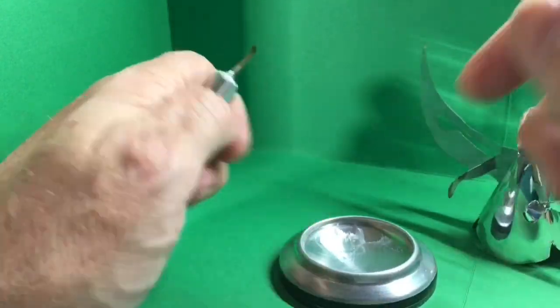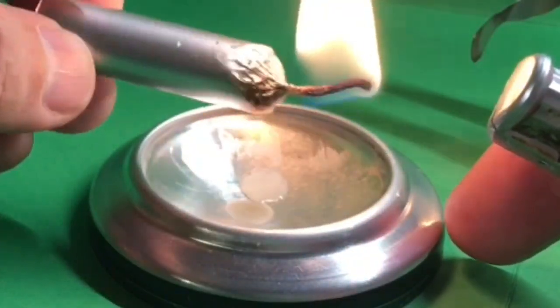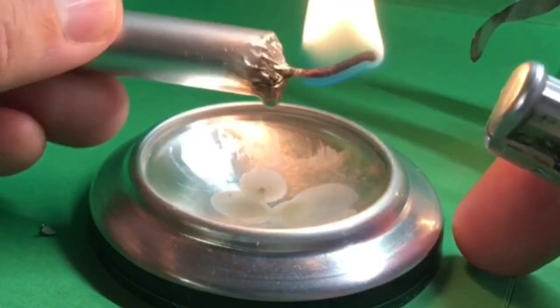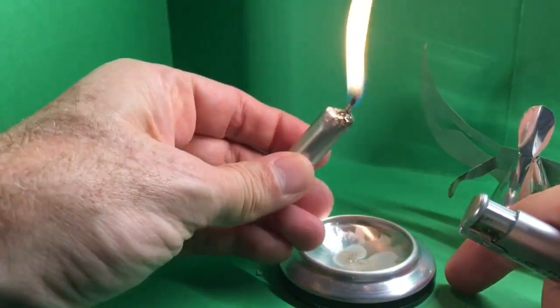Now light the candle and put some candle wax drops into the bottom so the candle is fixed.